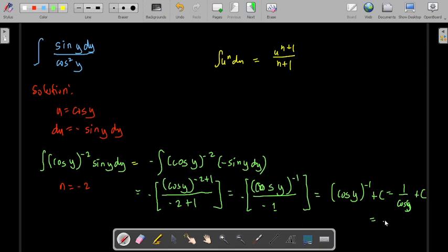plus c. Using an identity, we could say that the reciprocal of cosine is secant. So we could write this one as secant y plus c, and this is now our answer.